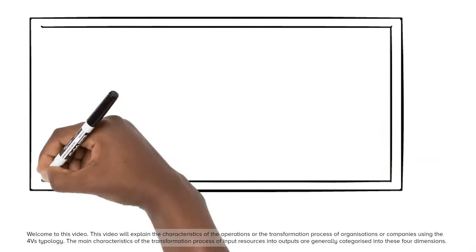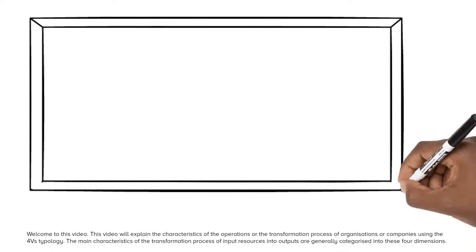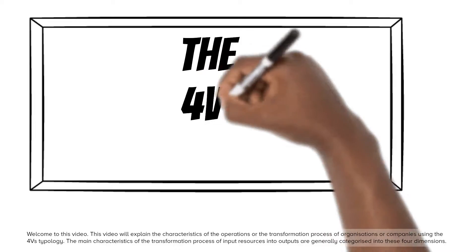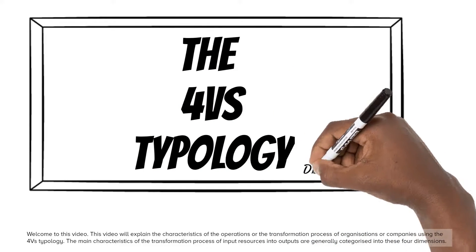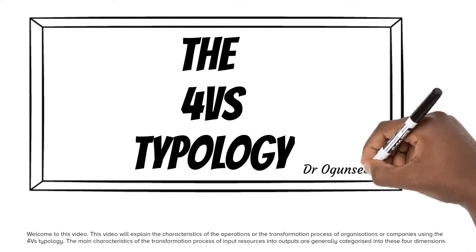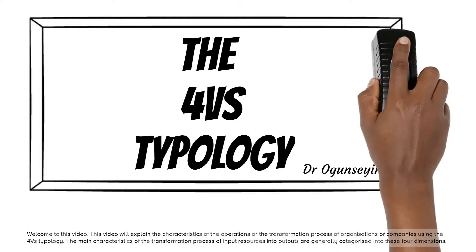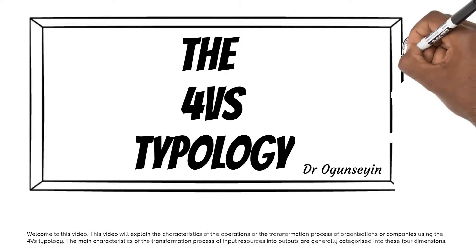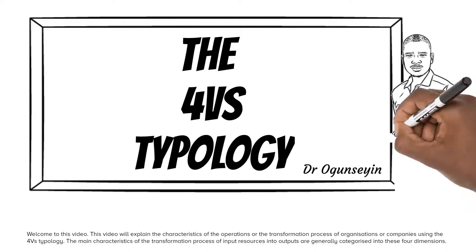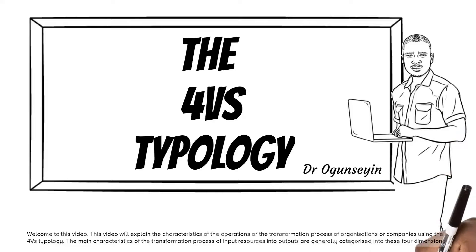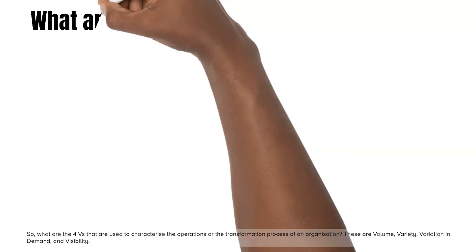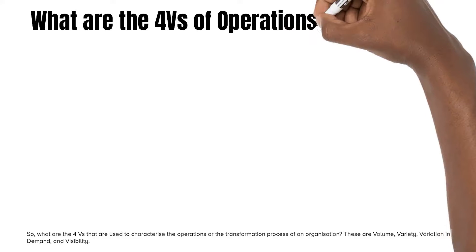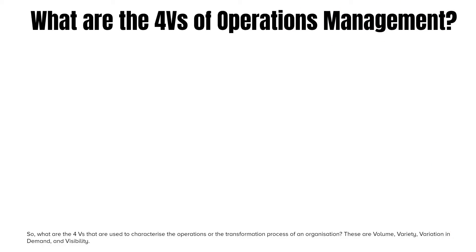Welcome to this video. This video will explain the characteristics of the operations of organizations or companies using the 4Vs typology. The main characteristics of the transformation process of input resources into outputs are generally categorized into these four dimensions. What are the 4Vs that are used to characterize the operations or the transformation process of an organization?